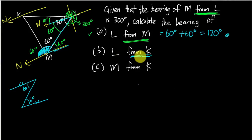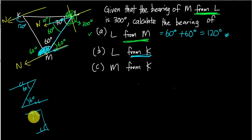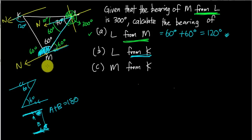For part B, L from K — the angle is at K. So from the north of K, I rotate clockwise until I touch line KL. I know here is 60°, and because the two north lines are parallel, co-interior angles add up to 180°, so this angle is 120°. The triangle has two known angles: 70° and 60°, totaling 130°, so the third angle is 180° minus 130° = 50°.